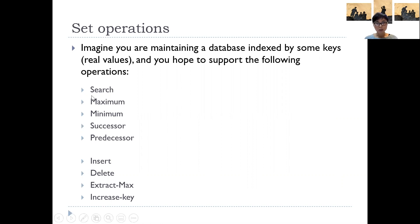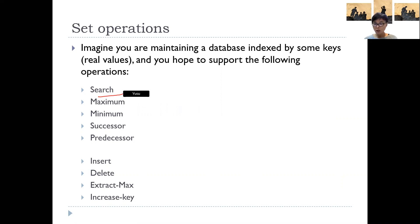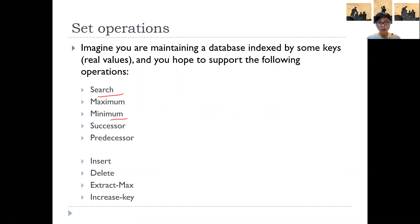You want to be able to search for a specific record. You also want to return, say, the students with the highest GPA, or the one with the minimum GPA and so on. In addition to this, let's say you also want to perform the so-called dynamic operations.